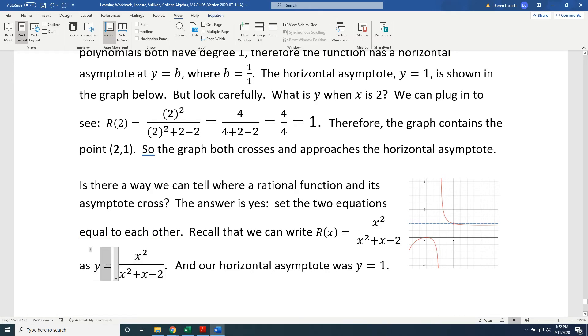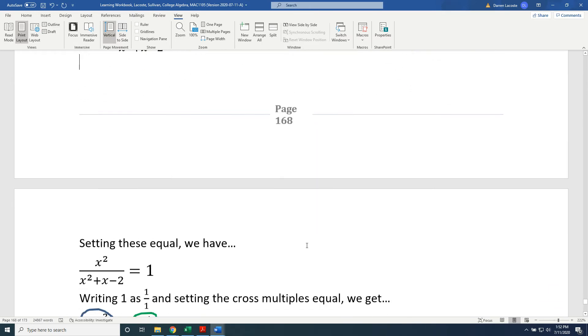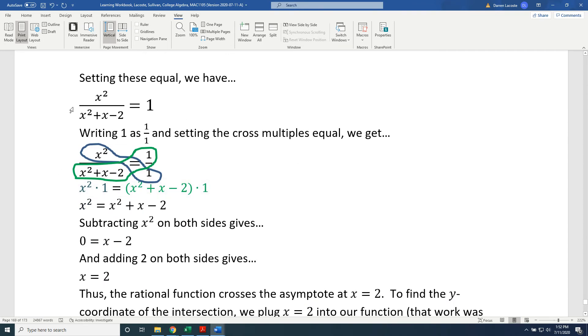Setting these equal, we have x² / (x² + x - 2) = 1. Writing 1 as 1/1 and setting the cross multiples equal, we get x² × 1 = (x² + x - 2) × 1. This simplifies to x² = x² + x - 2. Subtracting x² on both sides gives 0 = x - 2, and adding 2 on both sides gives x = 2.